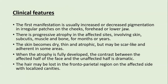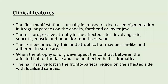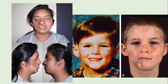Clinical features: the first manifestation is increased or decreased pigmentation in irregular patches on the cheek, forehead, and lower jaw — always unilateral. Progressive atrophy in affected areas involves the skin, subcutis, muscle, and bone, progressing for months or years. Skin becomes dry, thin, and atrophic, may be scar-like and adherent. When fully developed, the contrast between the affected and unaffected halves of the face is dramatic. Hairs are lost in the frontoparietal region on the affected side, with localized canities or white hairs.